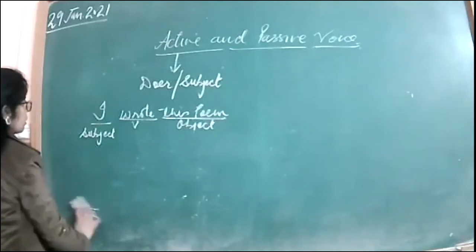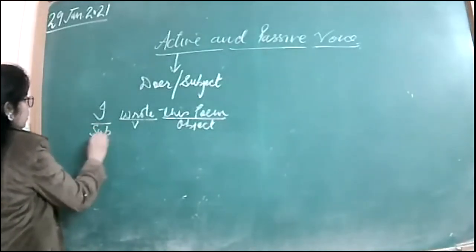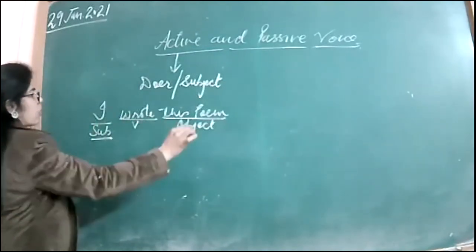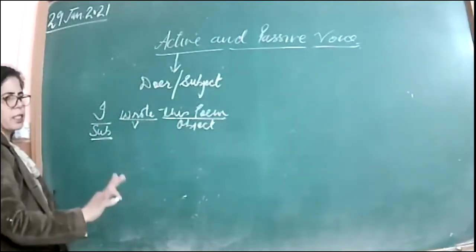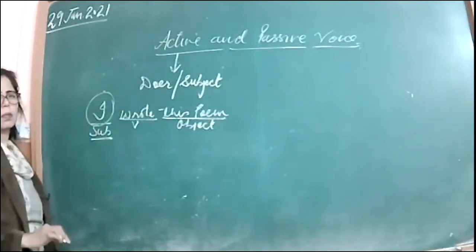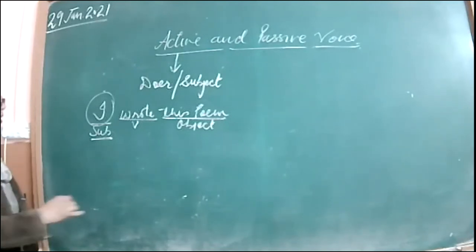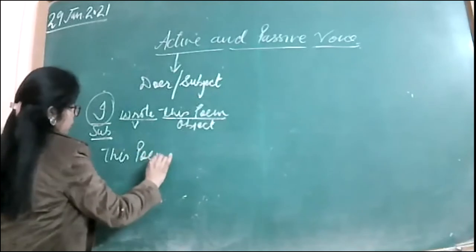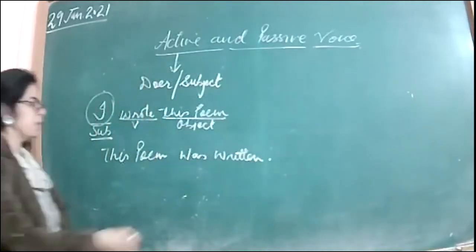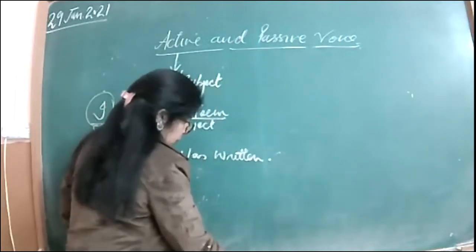Active voice is where the subject is more important than the action. In 'I wrote this poem,' the emphasis is on the doer. But if I want to emphasize the action, I'll say 'This poem was written by me' — and 'by me' is optional. Even if you don't write 'by me,' the sentence works, because the more important thing is what has been done: 'the poem was written.'